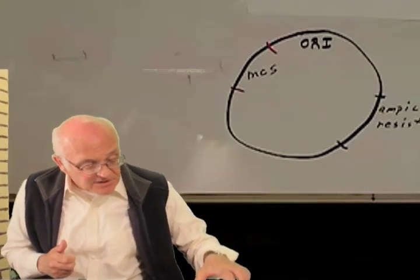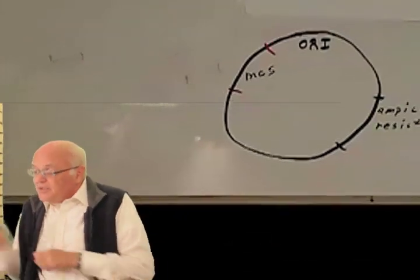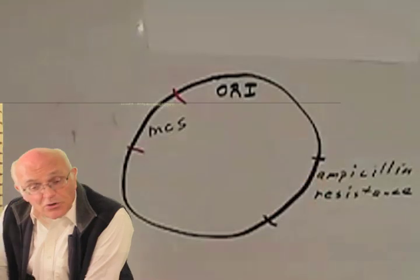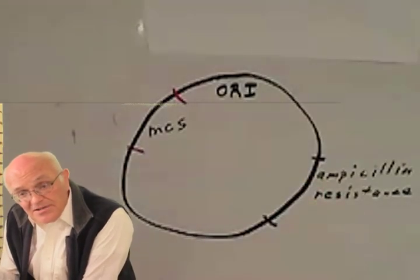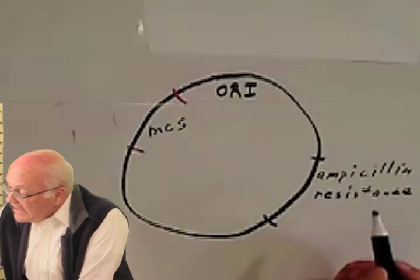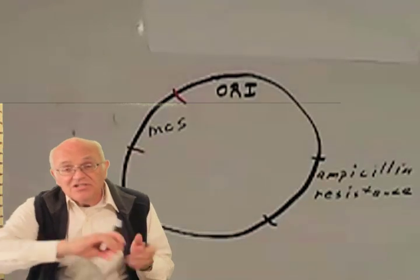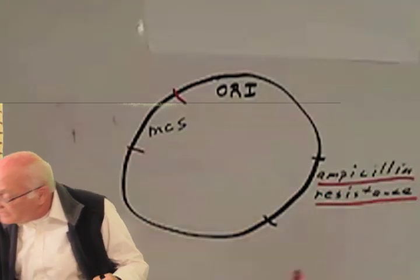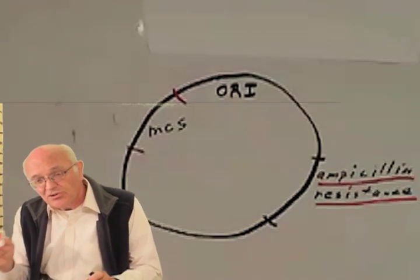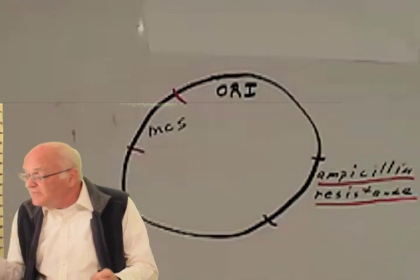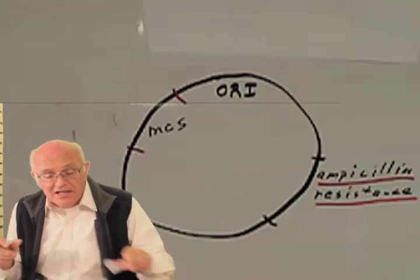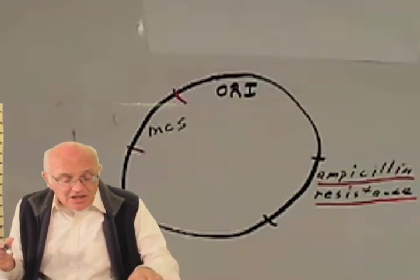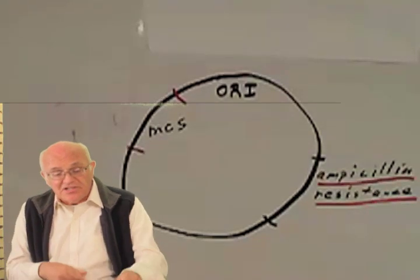Let's take a look at the bacterial artificial chromosome. The bacterial artificial chromosome has an origin of replication, the same as the F-plasmid. Important is that it has a gene for ampicillin resistance. It's a TREC. In fact, it's all TRECs in a way. But it has a gene for ampicillin resistance. And importantly is that it has a place called the multiple cloning site.